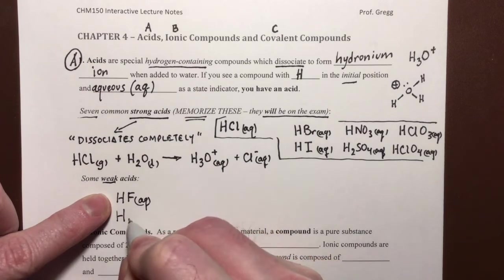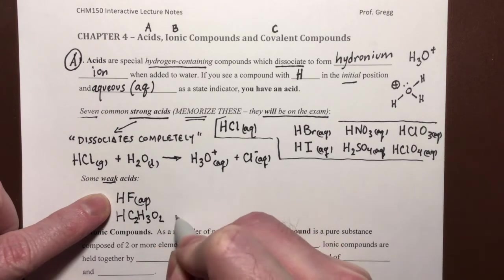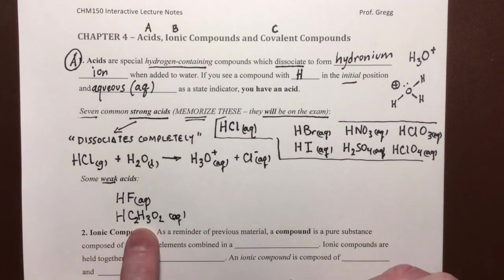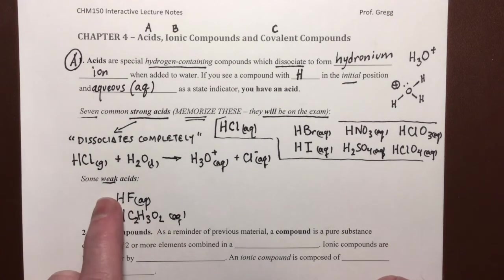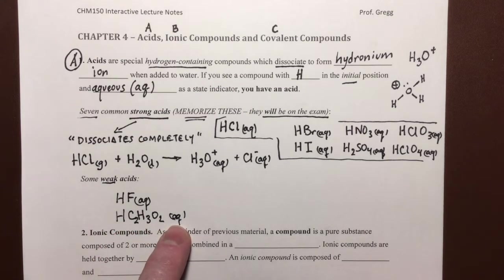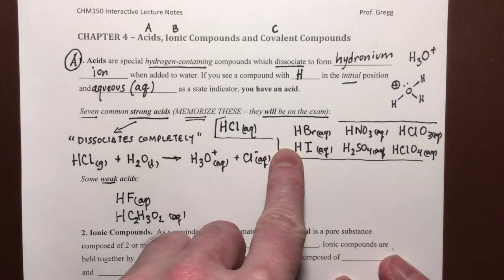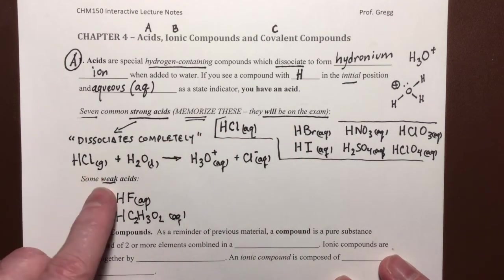Another example of a weak acid is HC2H3O2. This is called acetic acid. It happens to be the acid that is in vinegar. So, if we see an acid, and we recognize acids because they have a hydrogen in the first position, and they are aqueous, hydrogen, aqueous. If we see an acid, and it is not one of the seven strong acids that we have memorized, then we know that it must be a weak acid.